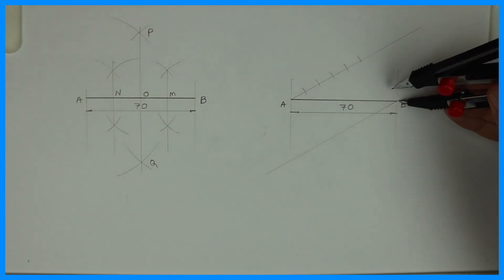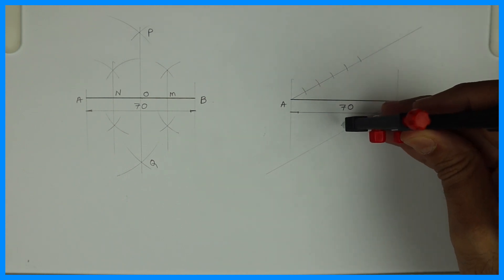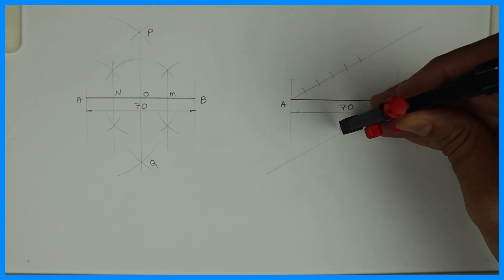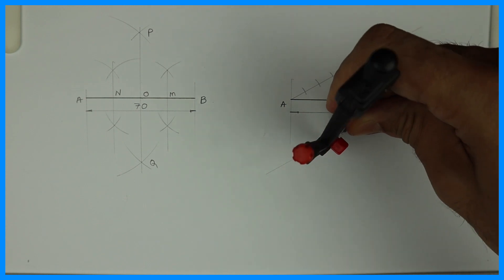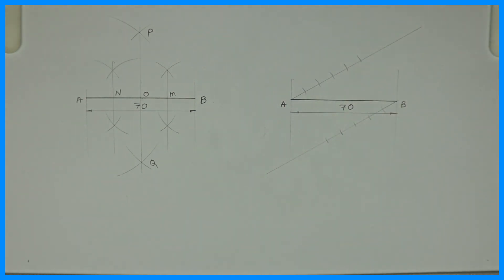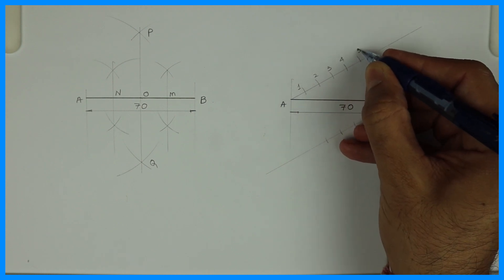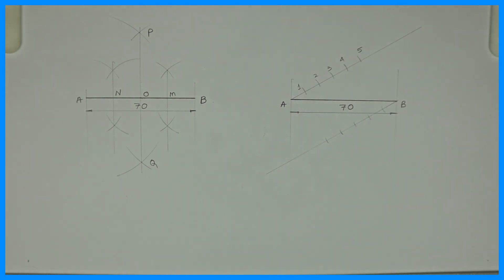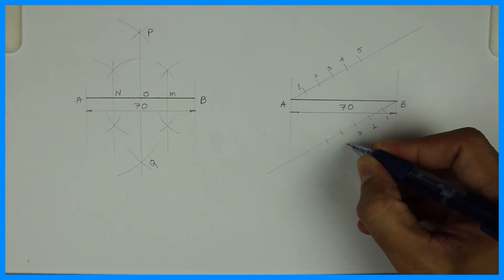Upward. Same way five times downward from B. Here it will be 1, 2, 3, 4, and 5. See this. One two three four five. Same way downward also 1, 2, 3, 4, 5.